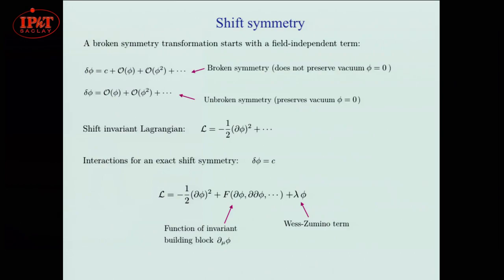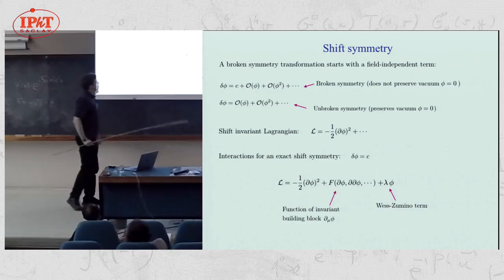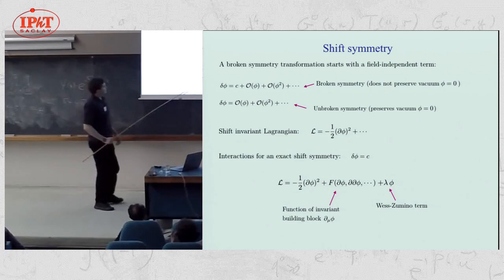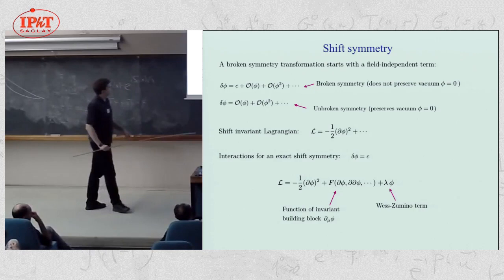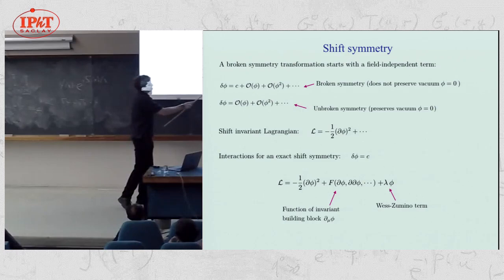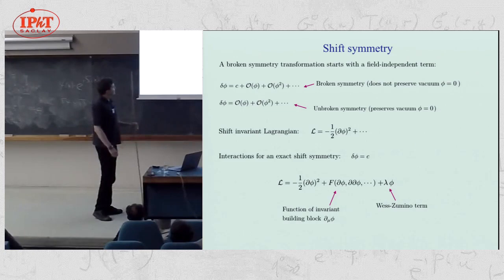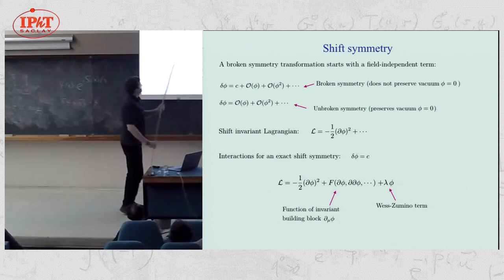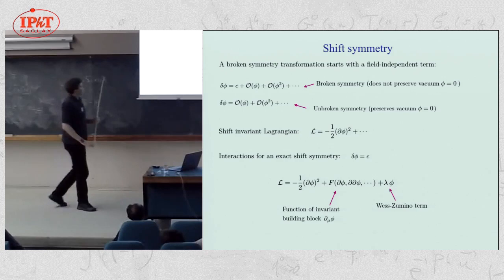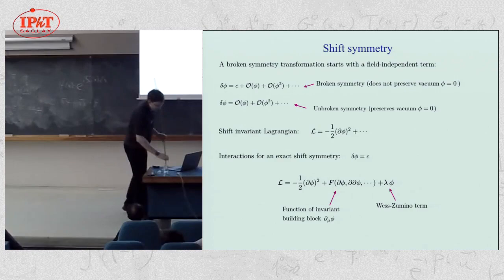If we suppose for a moment that the shift symmetry is exact, not corrected by any higher order stuff, then we know the most general interaction is just a function of the derivative of the field. The derivative of the field is your invariant building block for making invariant interactions. There's one exception: the Wess-Zumino term, which is linear in phi, has fewer than one derivative per field, and is invariant only up to a total derivative. There are also interesting non-abelian interactions if you allow for field-dependent terms, which gives you the linear sigma model.